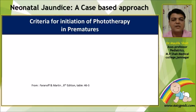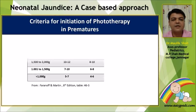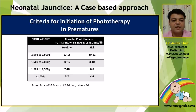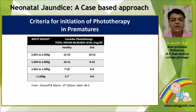Let us now see the criteria for initiation of phototherapy in premature newborns. These criteria have been adopted from the textbook of Fendroff and Martin. On the left-hand side of the screen there is a birth weight column, and the other parts are divided into healthy and sick premature baby criteria. For example, a less than 1 kg baby would need phototherapy between 5 to 7 mg per deciliter of total bilirubin, while a similar baby in a sick state will require phototherapy at lower values of total bilirubin like 4 to 6.